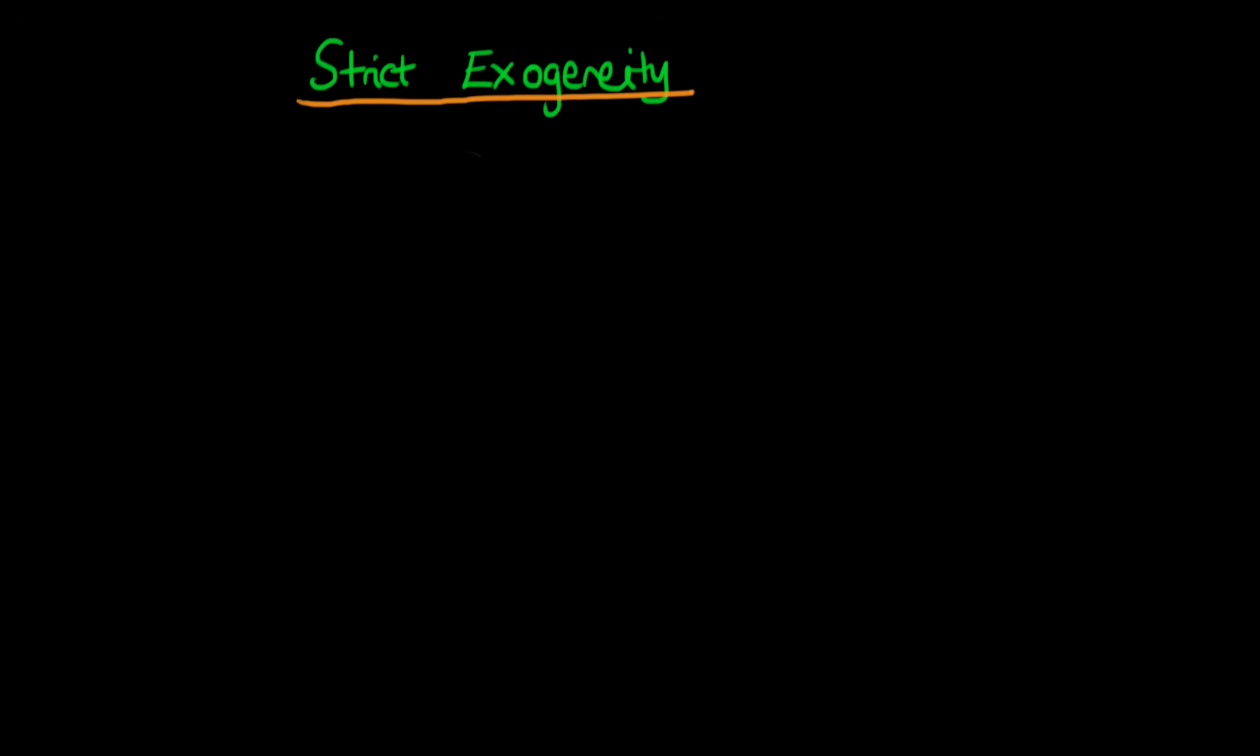In this video I want to talk about the assumption which we call strict exogeneity. I'm going to define exactly what I mean by that through an example. I've got a model where yt equals alpha plus beta xt plus some error ut.